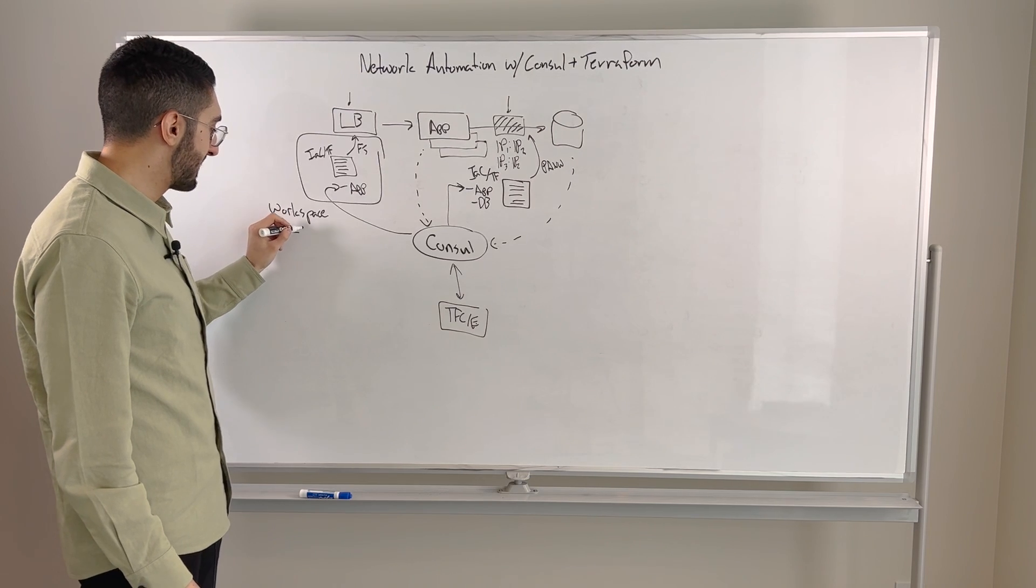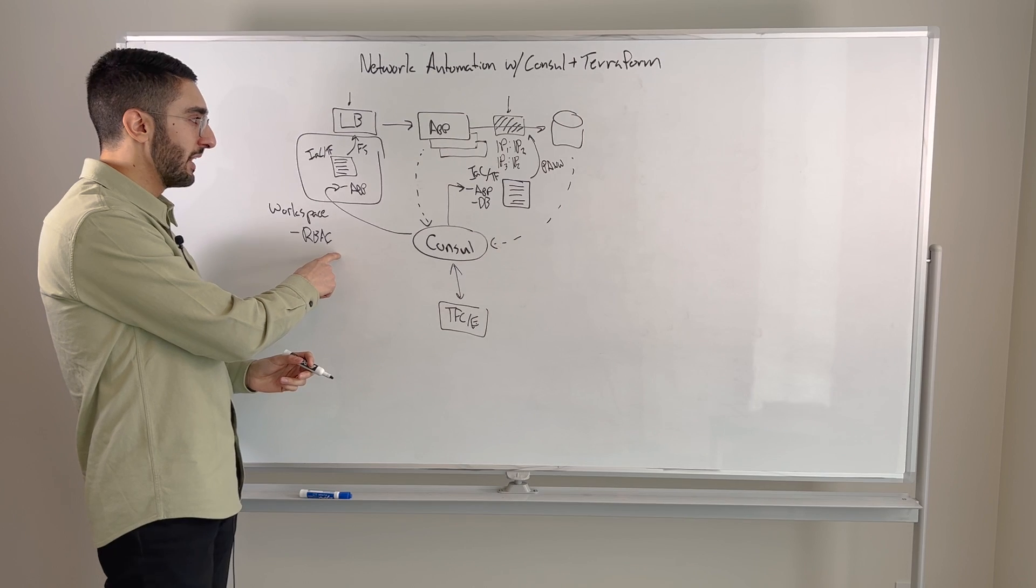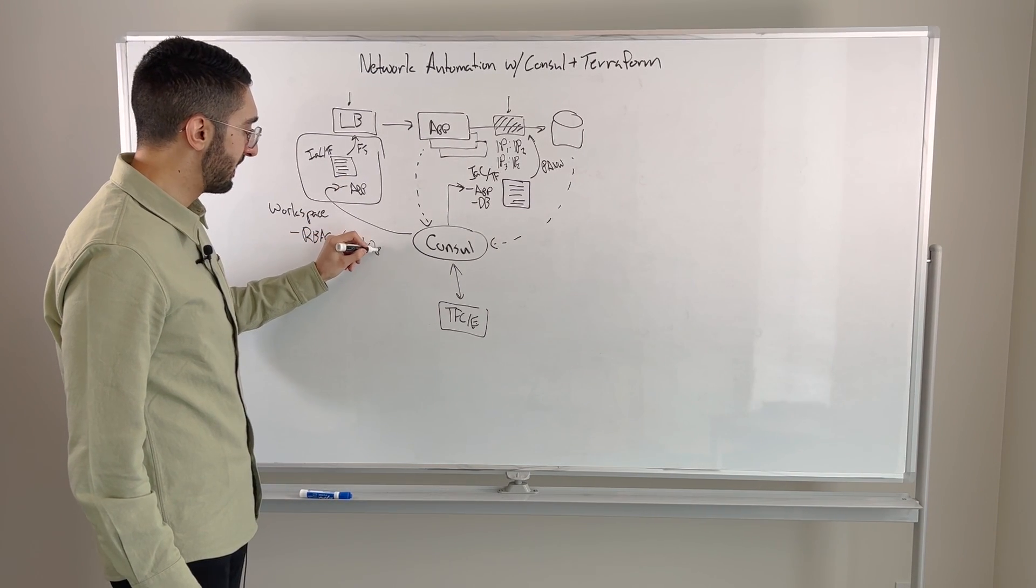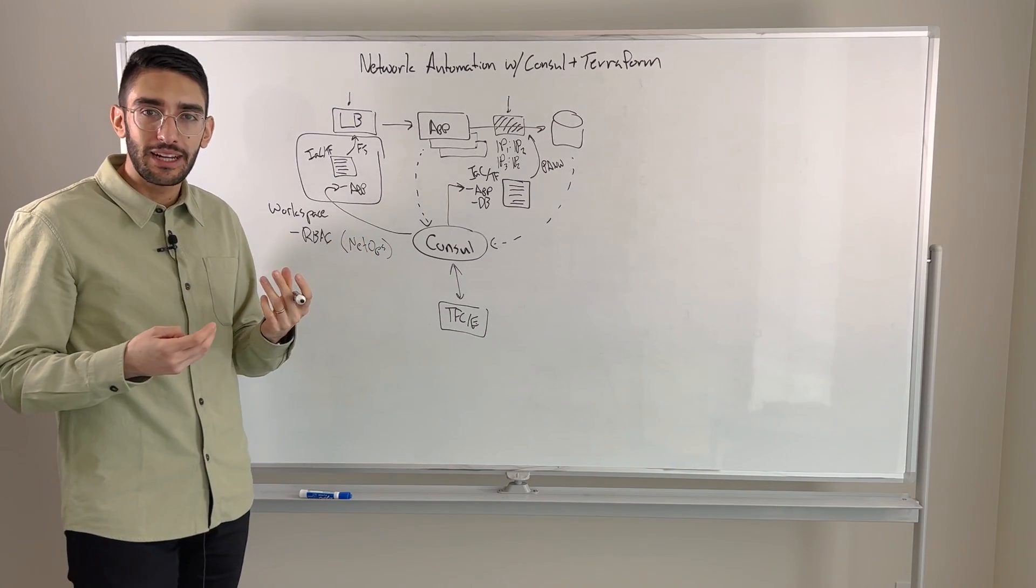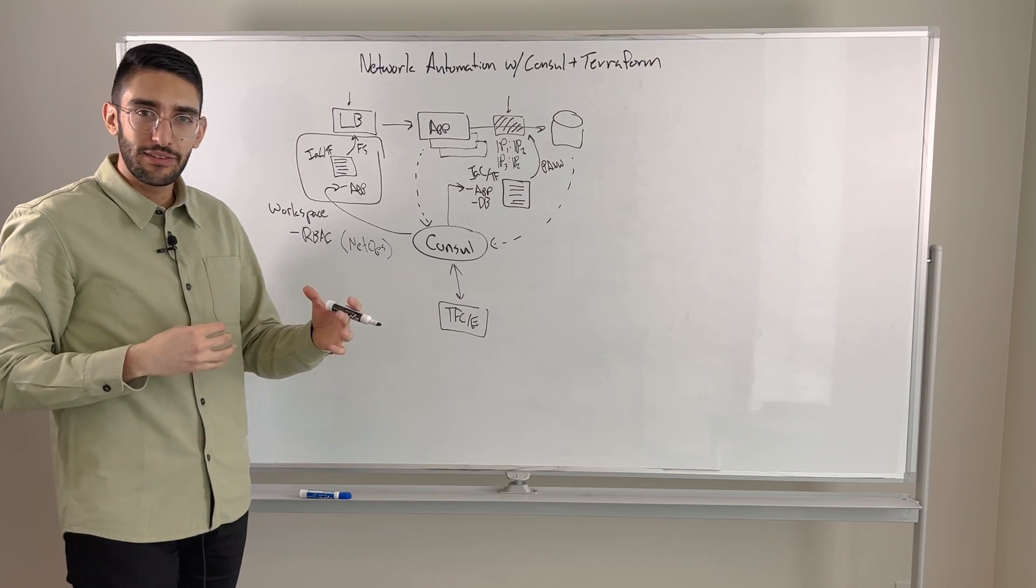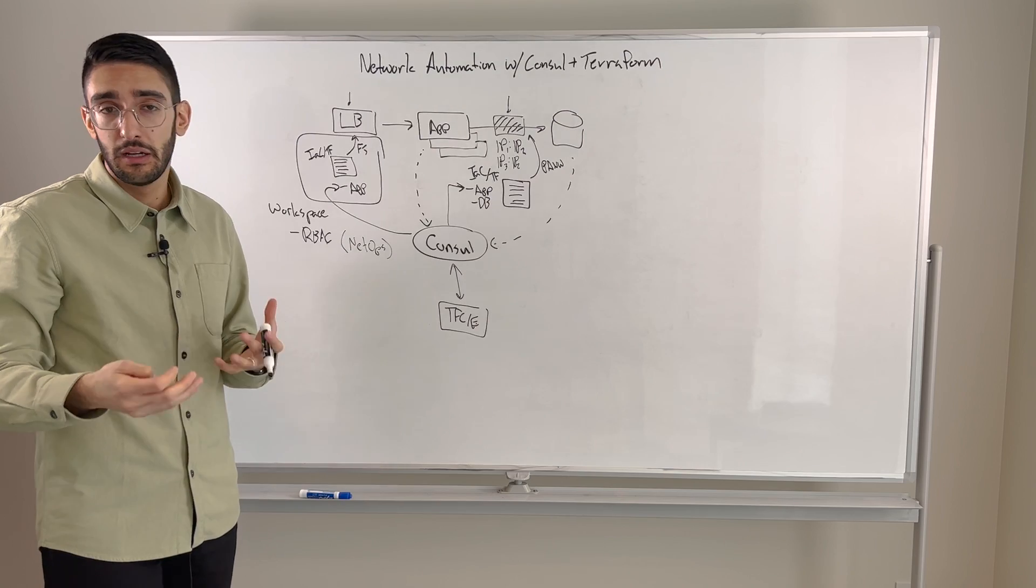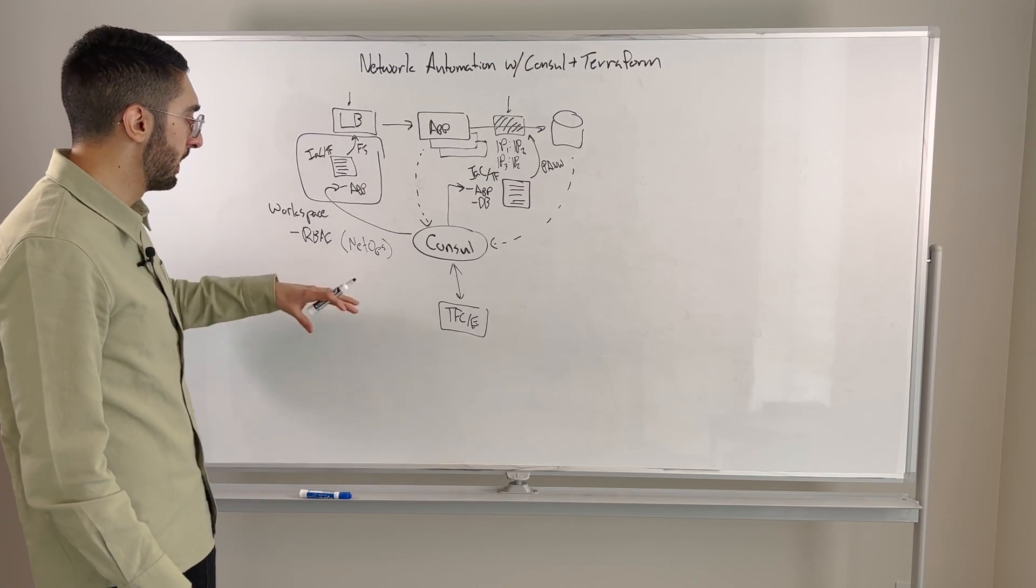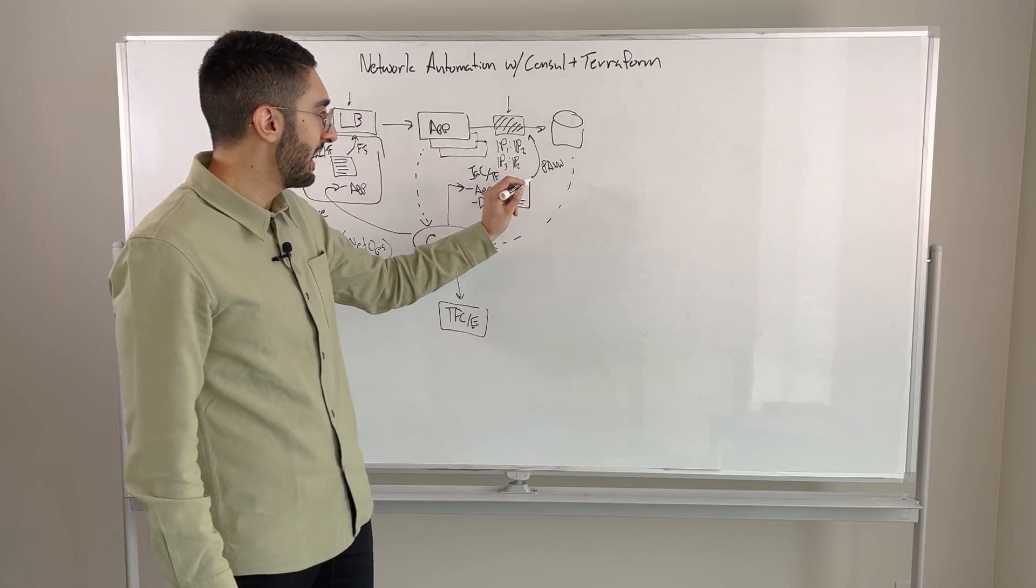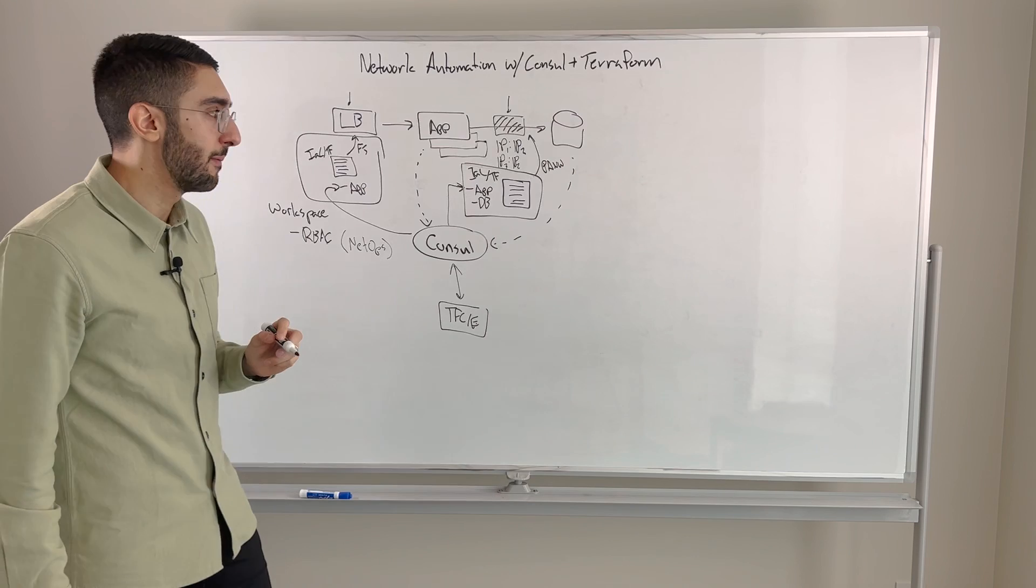One is we can obviously tie this into a role-based access control scheme. So we might say, great, only my actual NetOps team, they're allowed to come in and modify the Terraform definition. I want my networking team or my platform team. They own what the codified definition of this is. My developers shouldn't be able to modify it. Maybe they have permission to come in and read it. They should be able to see how it's configured to debug something or understand the system. But they don't actually need permission to be able to modify anything. So now we can tie each of these into their own workspace and apply role-based access control around them.